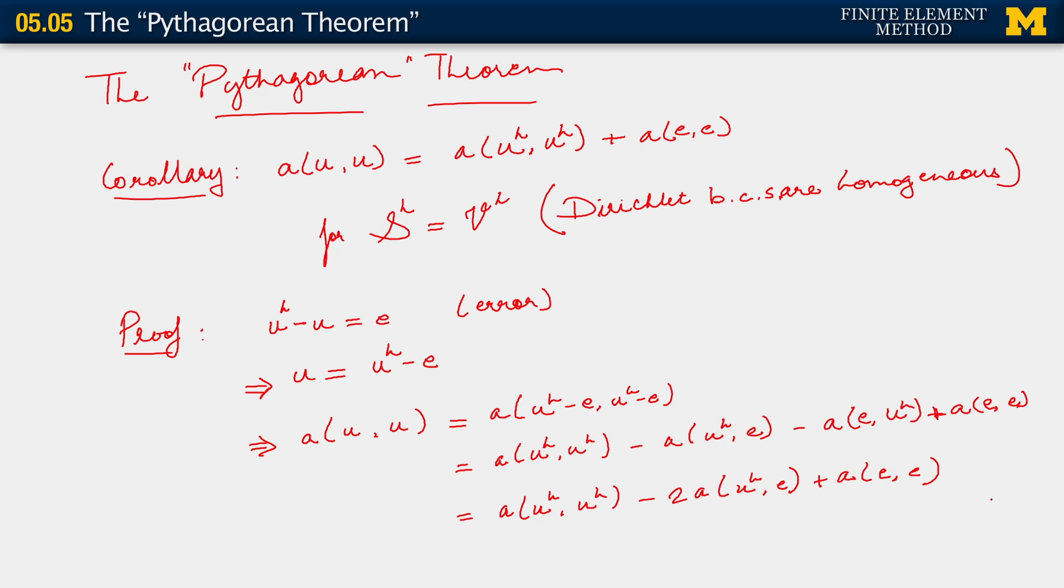But now, if you look at the condition in the statement of the corollary, you should be able to see something about the second term there. What can you say? This is equal to twice a(w_h, e), because the spaces S_H and V_H are the same. So u_h is the same as w_h. u_h is a w_h, it is indeed a weighting function. And this, therefore, is equal to 0 by consistency.